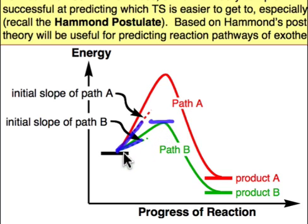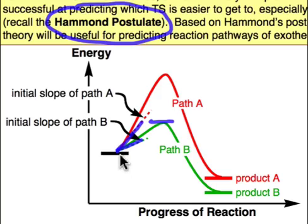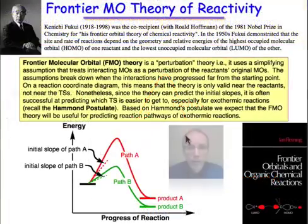This idea of exothermicity as being where the FMO theory is going to be most applicable is related to Hammond's postulate, which basically says that the energies of the transition states are going to resemble the energy of the species that they are most closely related to. In this case, for exothermic reactions, that's going to be the reactants.